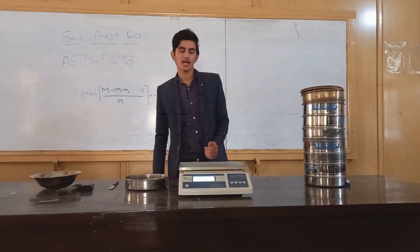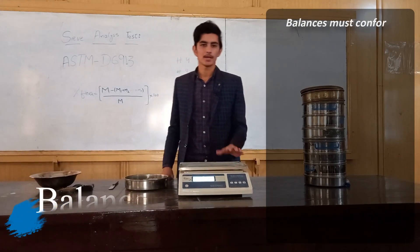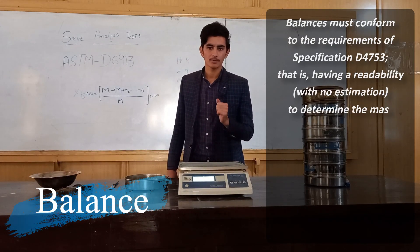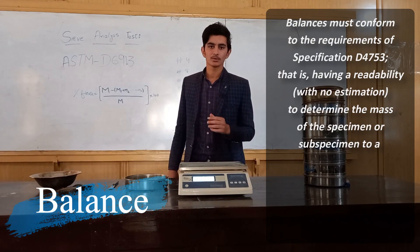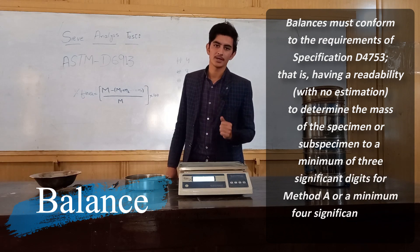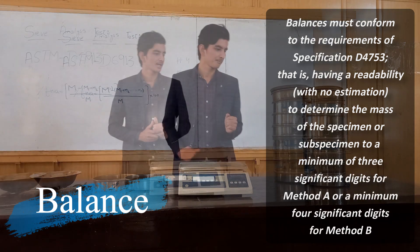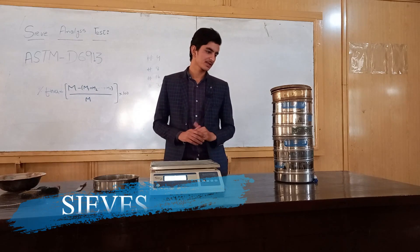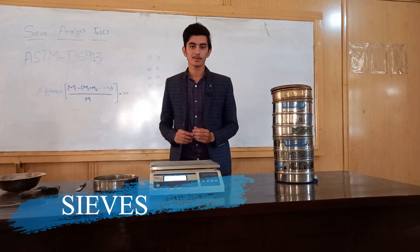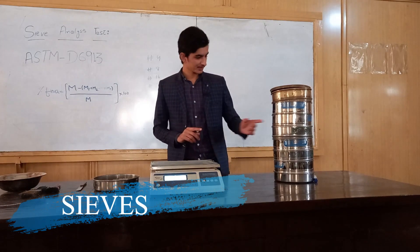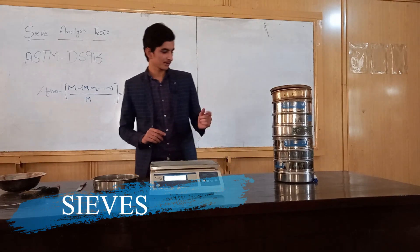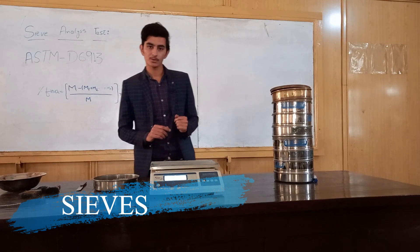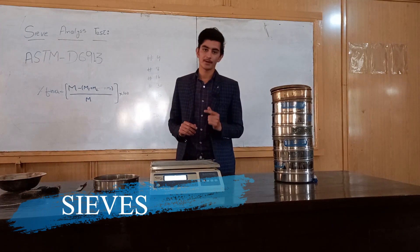In the apparatus we have a digital balance, which is used to measure the weight and mass of particles retained on each sieve. The second thing we have is a set of sieves. In the set of sieves we have sieve number 4, sieve number 8, sieve number 16, sieve number 30, sieve number 50, sieve number 100, sieve number 200, and pan.